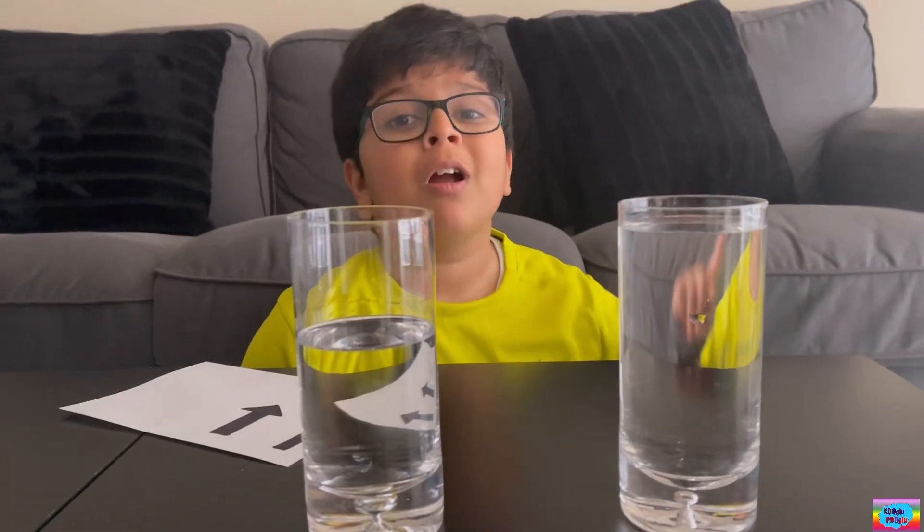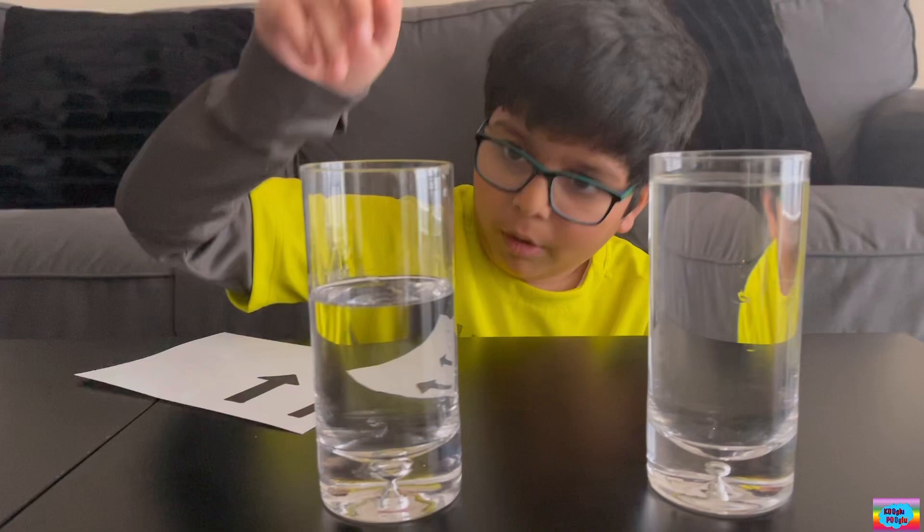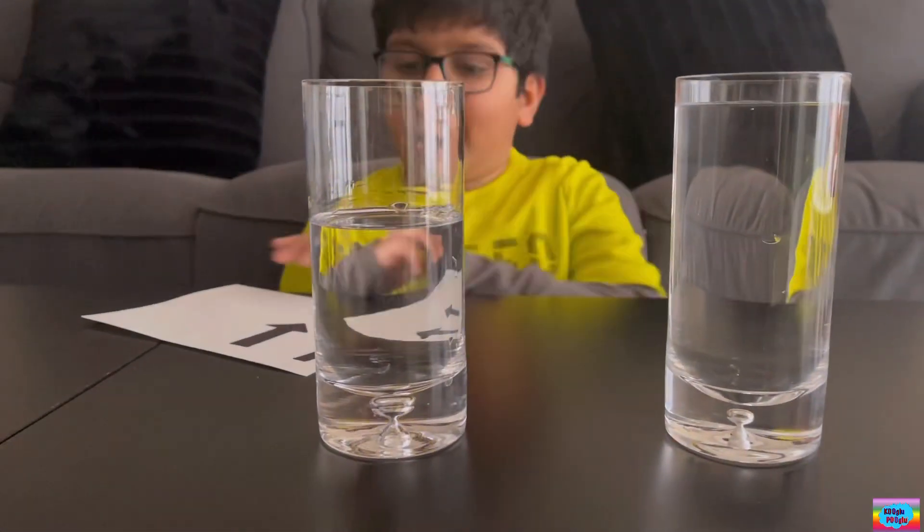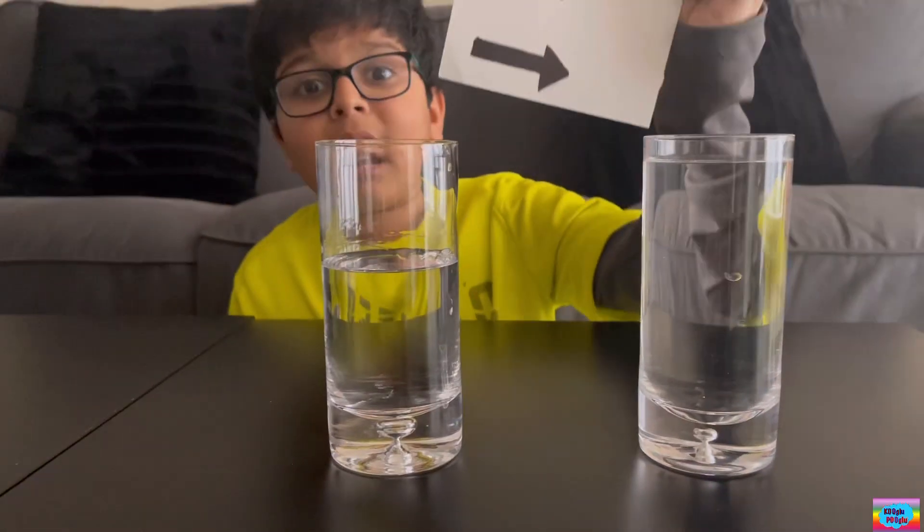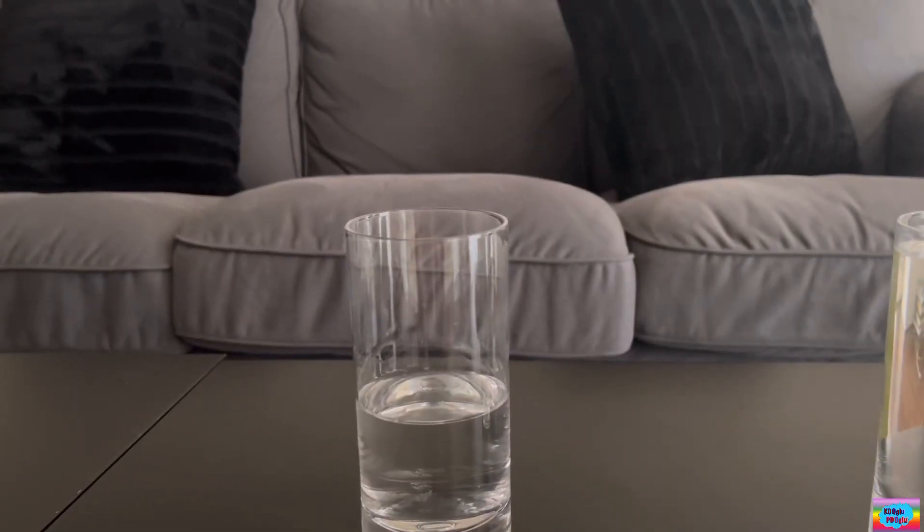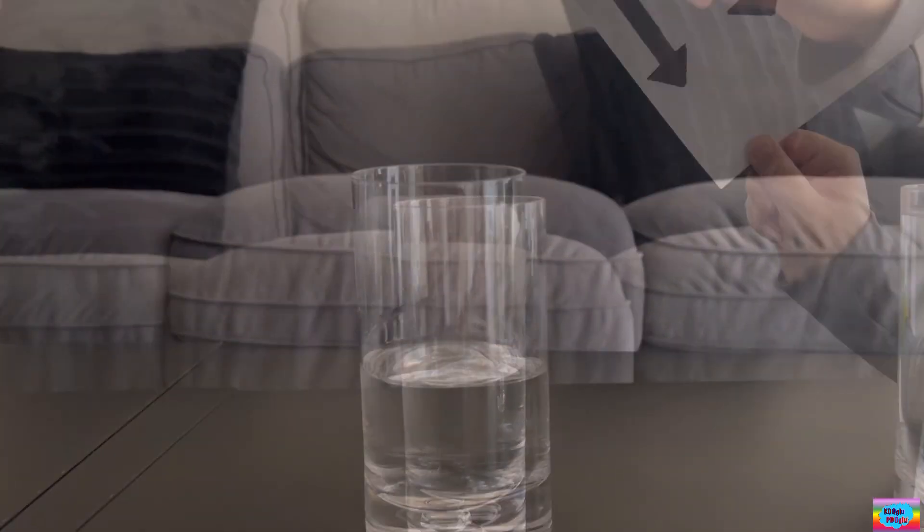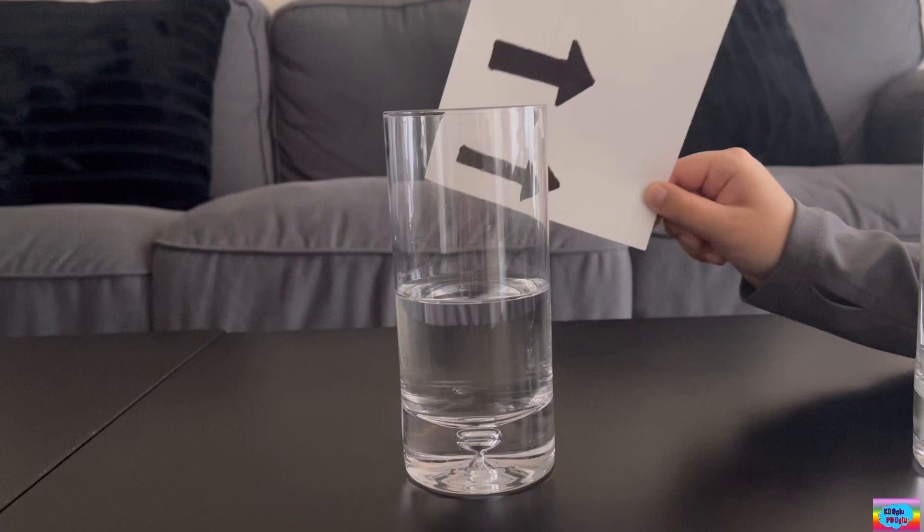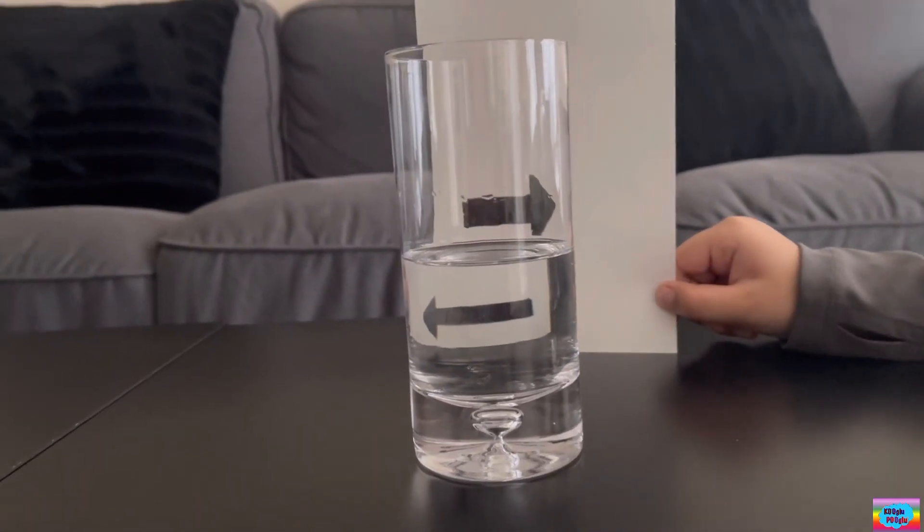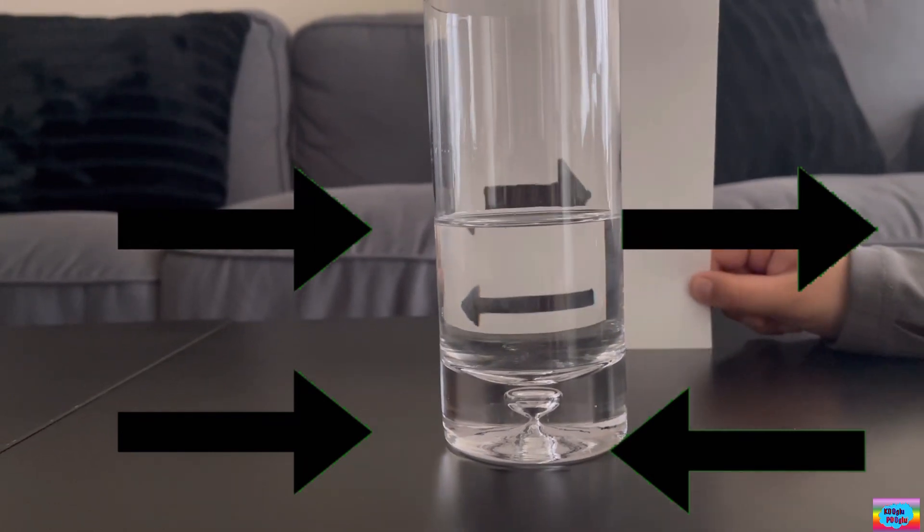Remember those arrows we drew? We're gonna use them for this experiment. We're gonna try with a half cup and a full cup. First, let's try with a half cup and see if these arrows go in the opposite direction. Slowly move it down. Yes! We got the result!